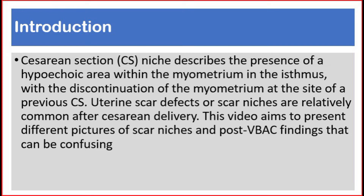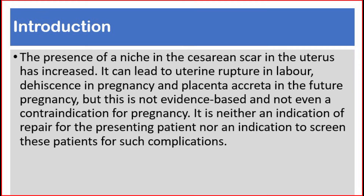This video aims to present different pictures of scar niches and post-vaginal birth after caesarean section findings that can be confusing. The presence of a niche in the caesarean scar in the uterus has increased, and it can lead to uterine rupture in labor, dehiscence in pregnancy, and placenta accreta in future pregnancy.